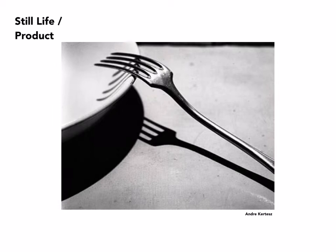André Kertész was a Hungarian photographer who lived in Paris for many years until he was forced out during the Second World War and lived in New York for the last days of his life. This was made in Paris using extremely simple objects — a fork lying against a bowl on a table. The play of the shadows and the objects are really what it all becomes. It's almost abstract, but not quite, and an extremely powerful image from very humble materials.